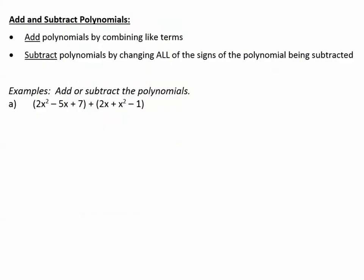Now let's talk about how to add and subtract polynomials. Add polynomials by combining like terms, like we do when we solve equations. Subtract polynomials by first changing all of the signs of the polynomial being subtracted and then combining like terms. Let's take a look at some examples.